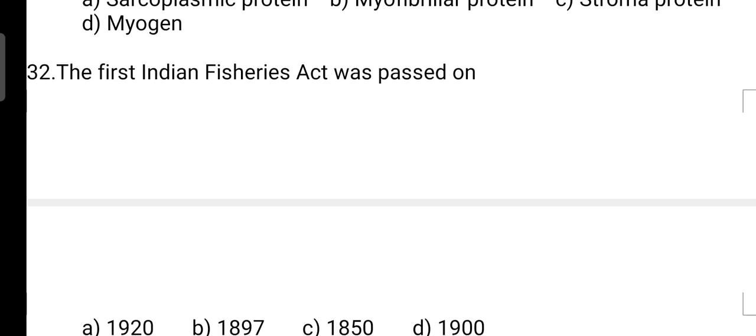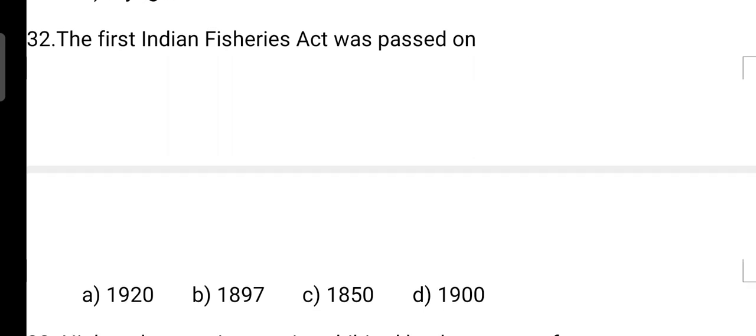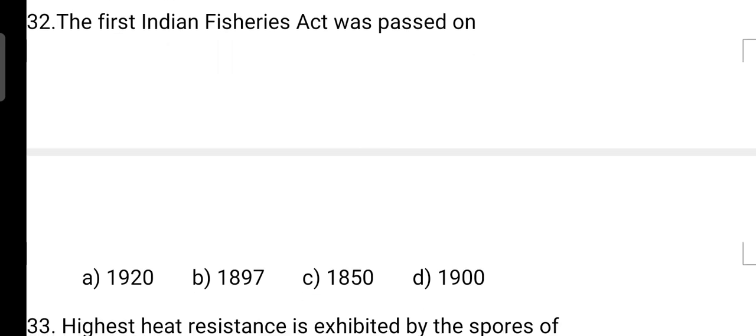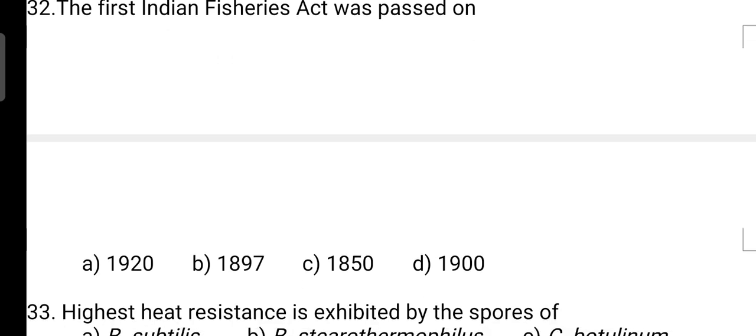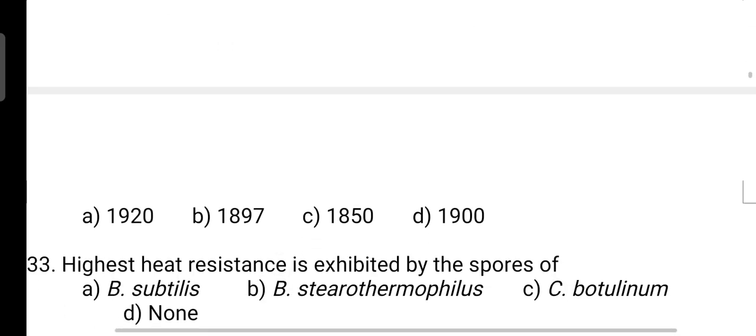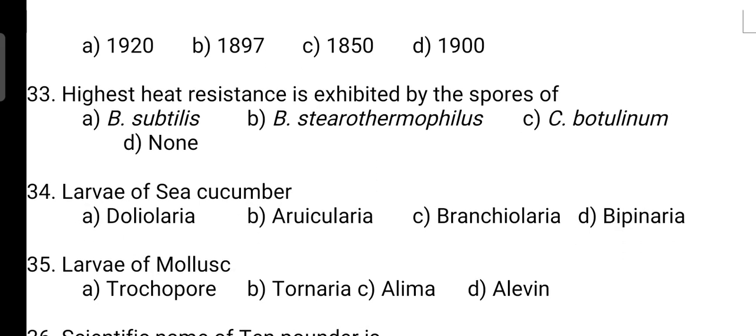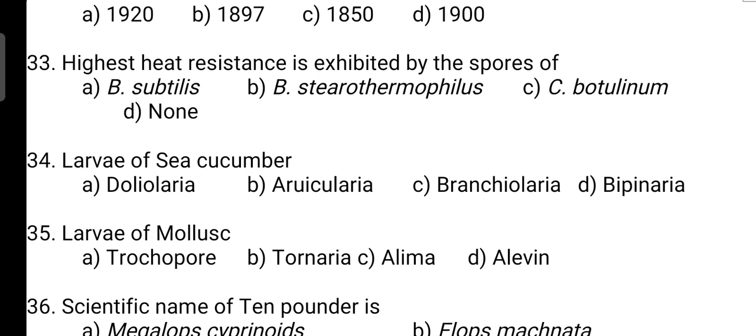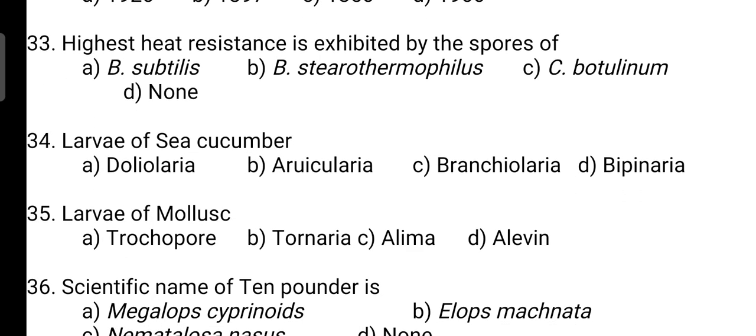The first Indian Fisheries Act was passed when? Correct answer is Option B — it was passed in 1897. Next, highest heat resistance is exhibited by the spores of? Correct answer is Option C — it is Clostridium botulinum.